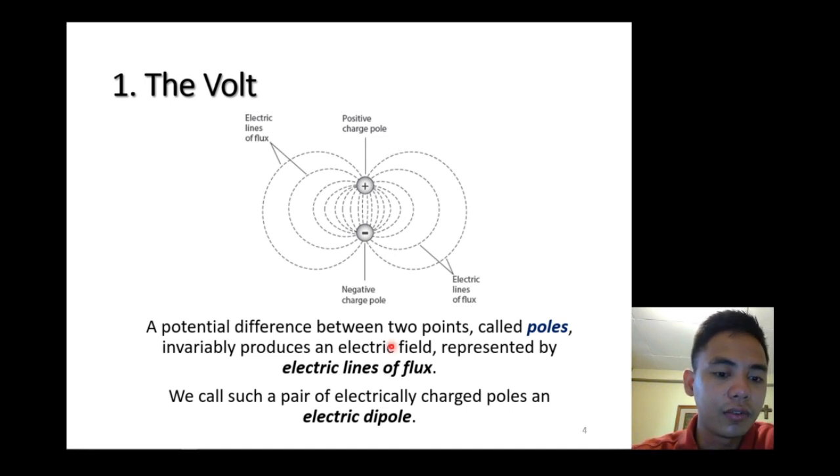The better if you are inside, the more intense the electric field. If you are outside, there's lesser intensity. It is represented by this line of flux. We call such a pair of electrically charged poles an electric dipole.